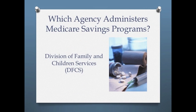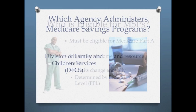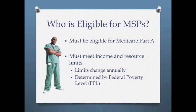Medicare Savings Programs are administered by state-specific Medicaid or social services agencies. To qualify, applicants must be eligible for Medicare Part A and meet the income and resource limits. These limits change annually and are determined by the federal poverty level.